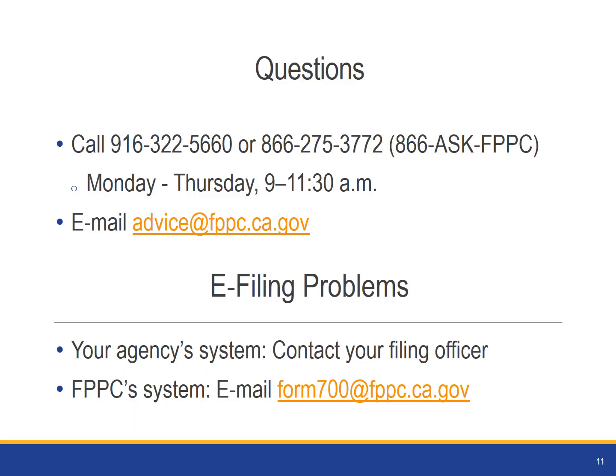If you have further questions on completing your Form 700, we are available to help. For questions on what to disclose or how to disclose it, please call us during advice hours or send us an email. If you are having technical problems with your agency's e-filing system, please contact the filing officer at your agency to see who provides support for your system. If you are having technical issues with the FPPC system, please send an email to the address noted on this slide.